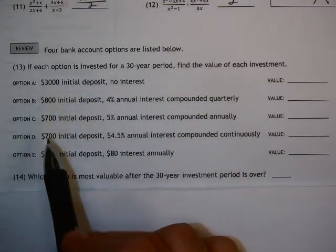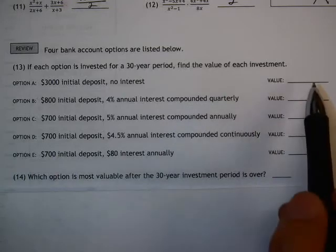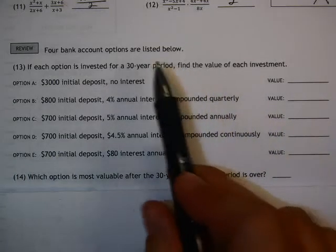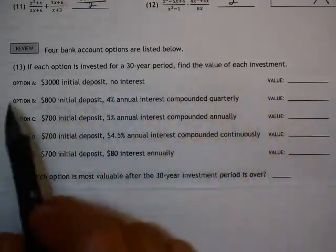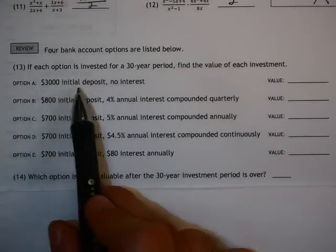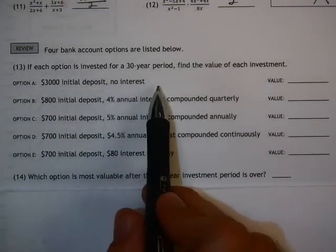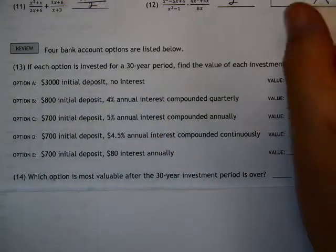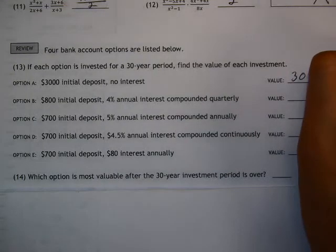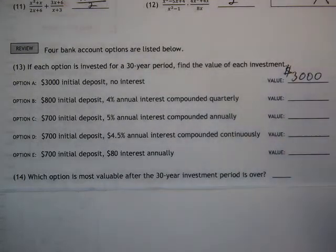I'm going to go through all these options A through E and try to find the total value after this 30-year period ends. Option A says $3,000 initial deposit, no interest at all, which means it literally will not change one bit. At the end of 30 years, it's still going to be $3,000, which is probably not the option you want to go with.